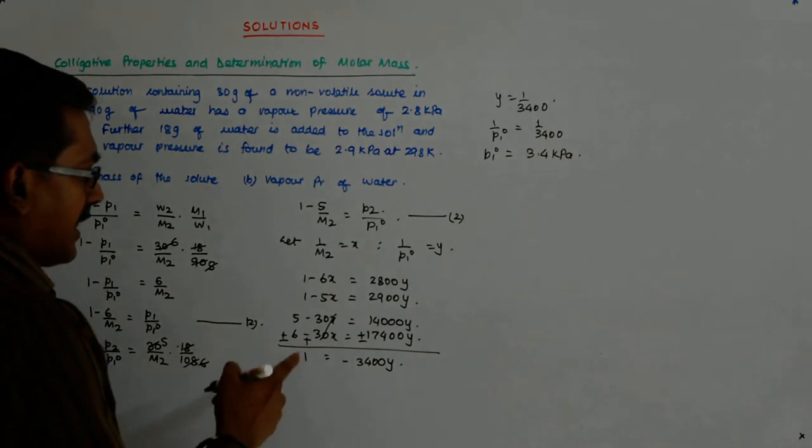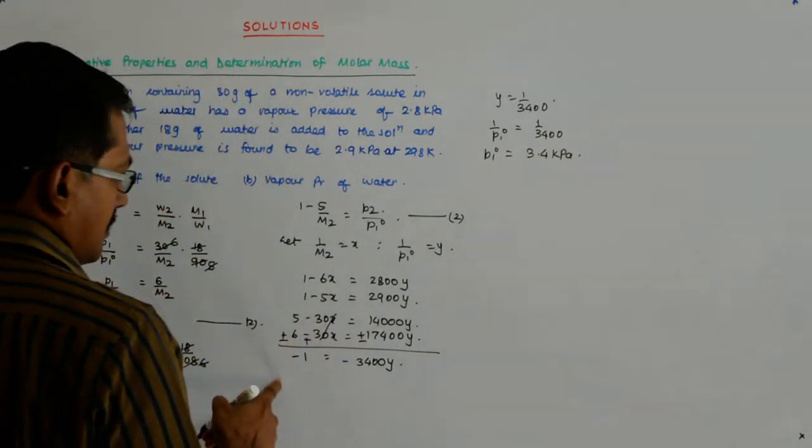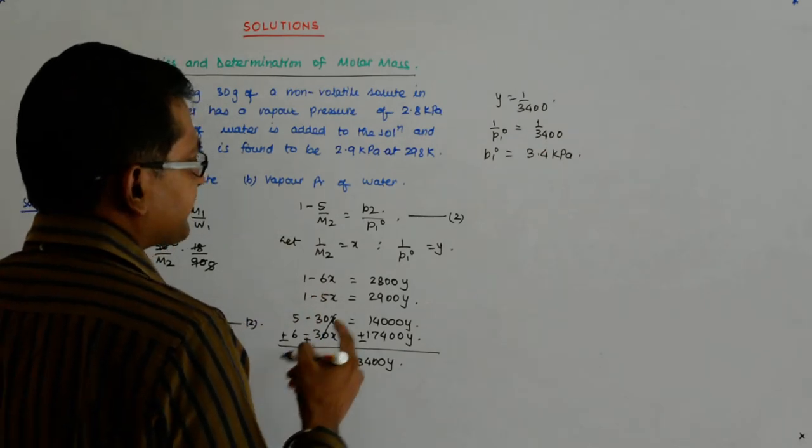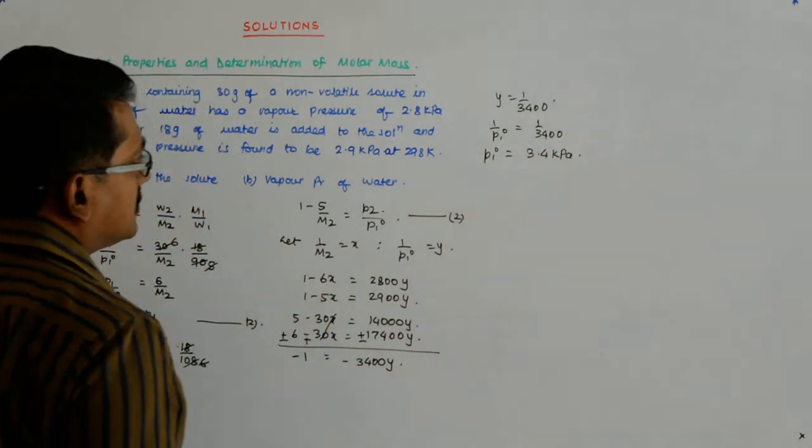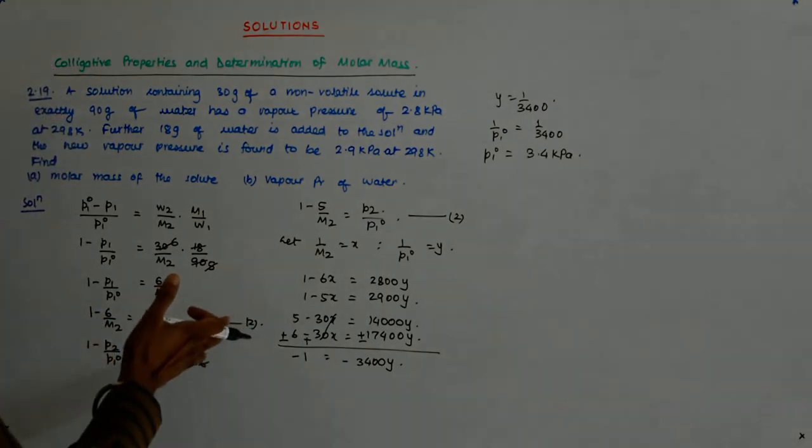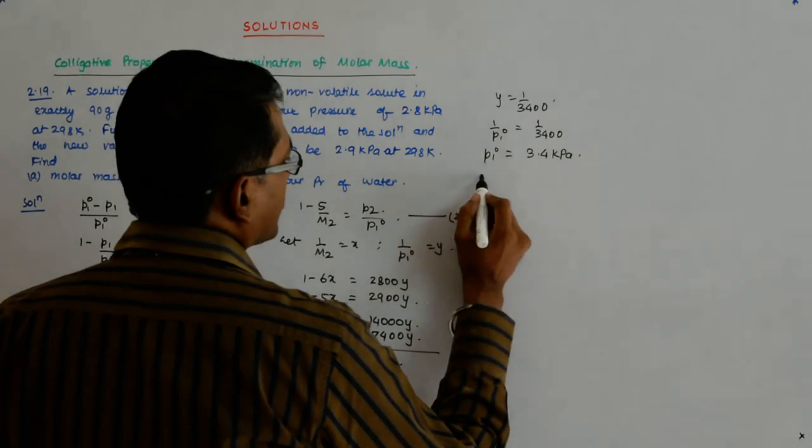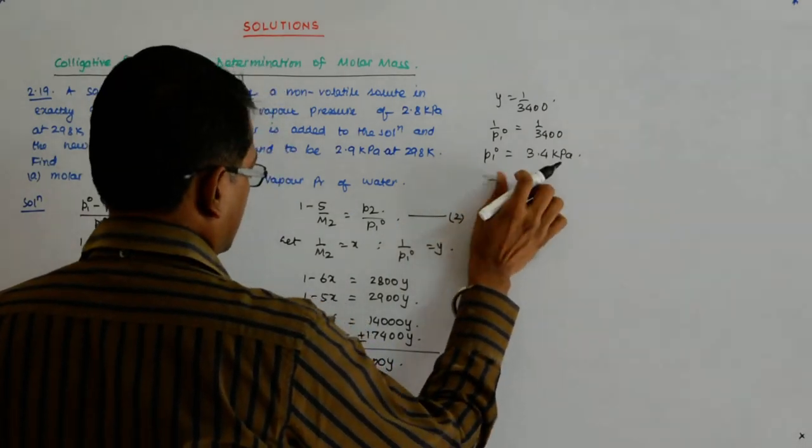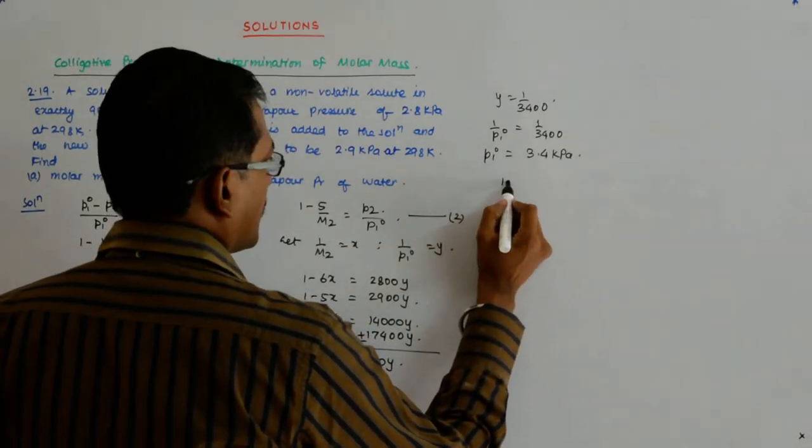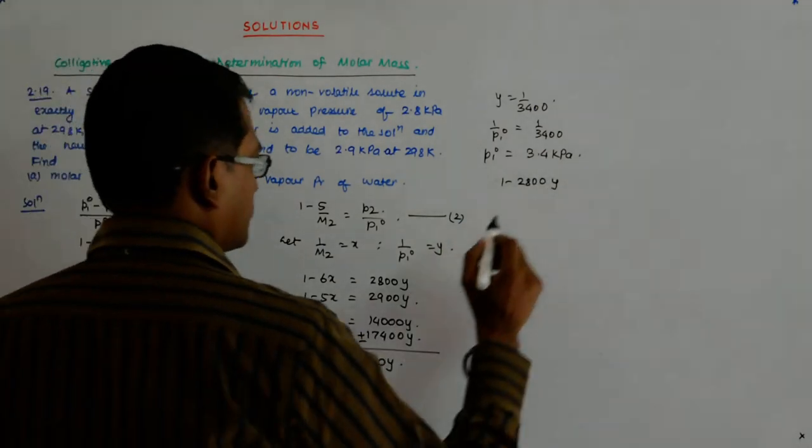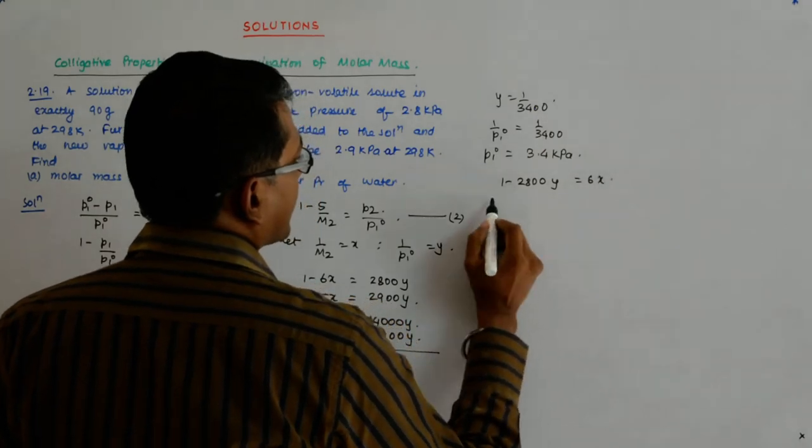And what is my x? What is my x? Wait. Now what happens? What is my x? My x is 1 minus, sorry. So yeah, 1 minus 2800y is equal to 6x.